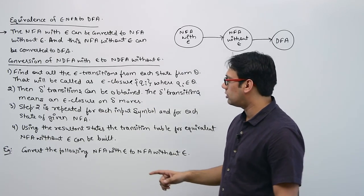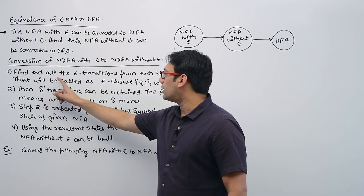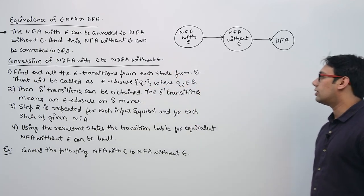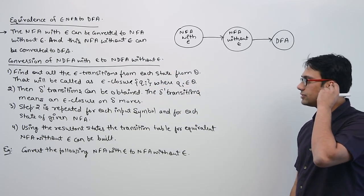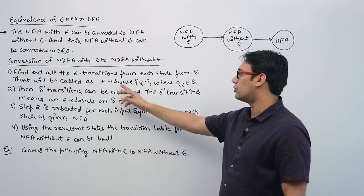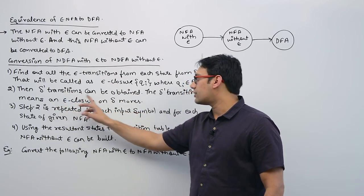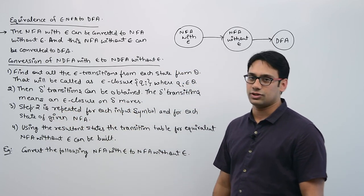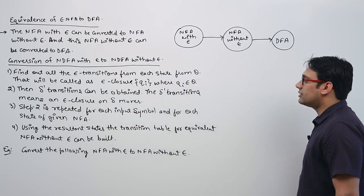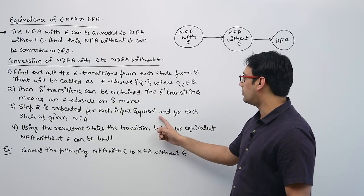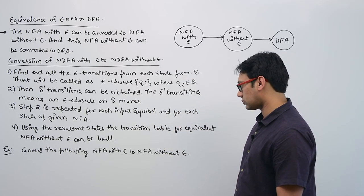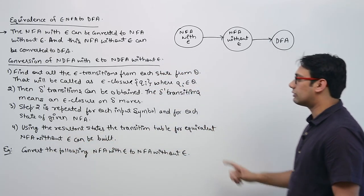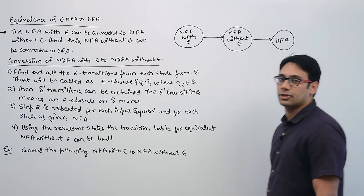So what is the procedure? First, find all the Epsilon transitions from each state Q — that will be called the Epsilon closure. For every state, find an Epsilon closure, then the delta-dash transition can be obtained. The Epsilon-dash transition means the Epsilon closure on the Epsilon delta move. Step 2 is repeated for each input symbol and for each state of the given Epsilon NFA. Then, using the resultant state transition table, the equivalent NFA without Epsilon can be built.